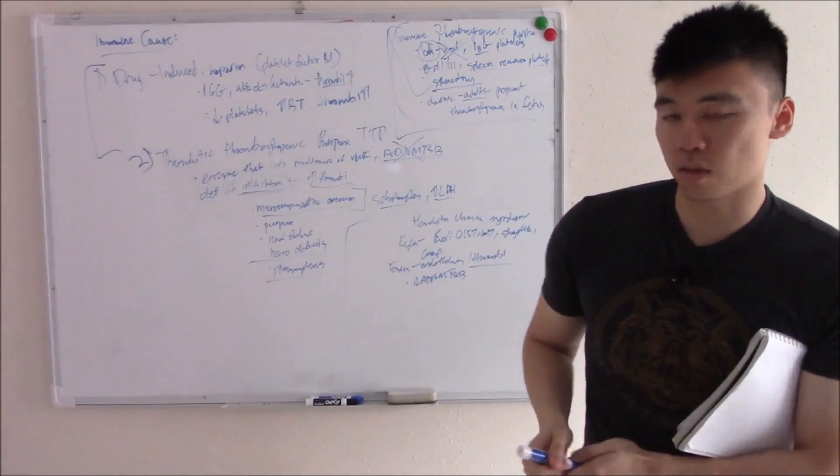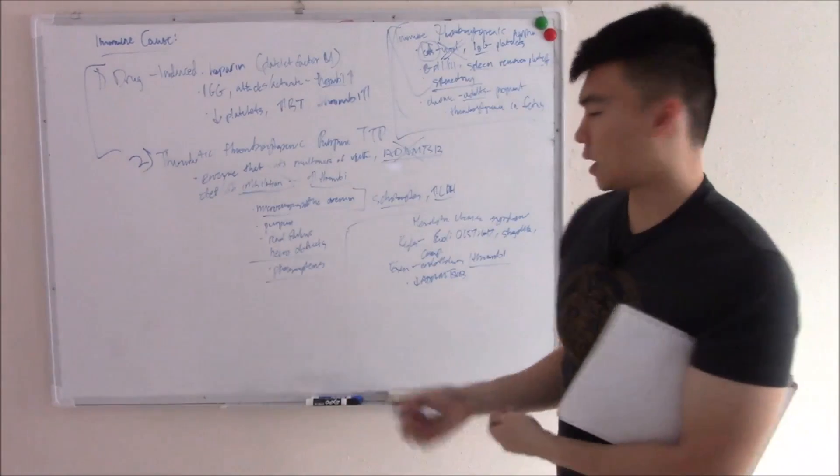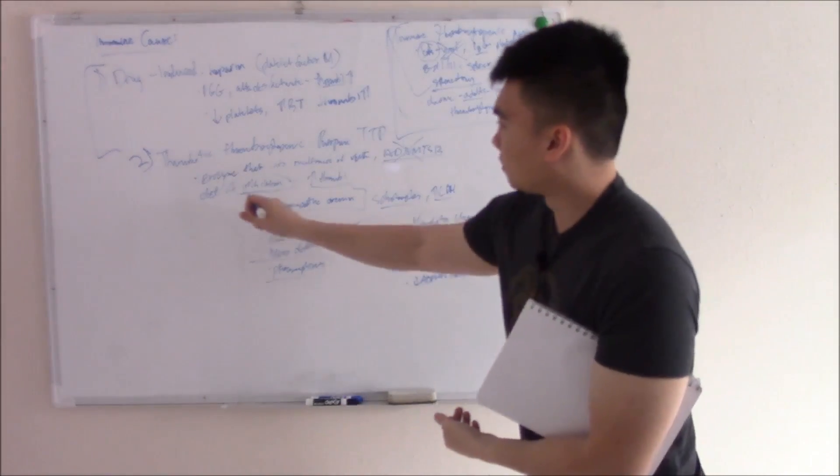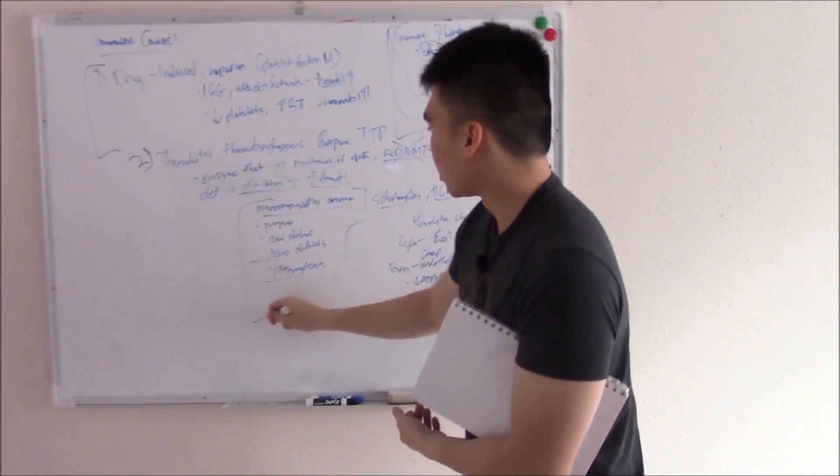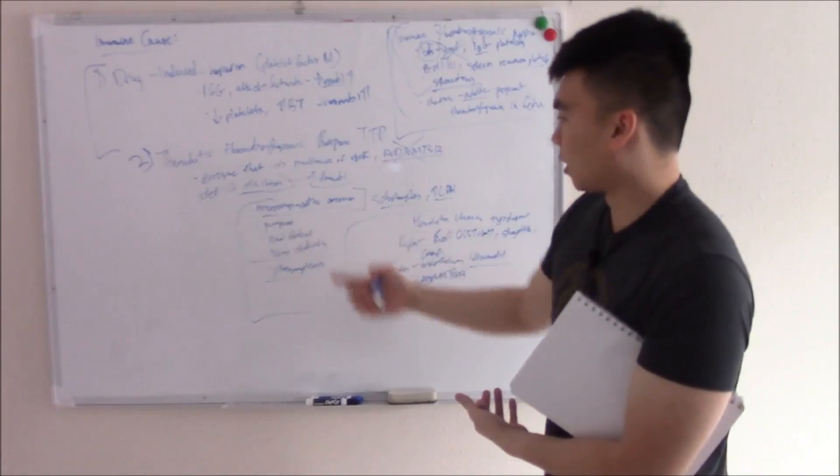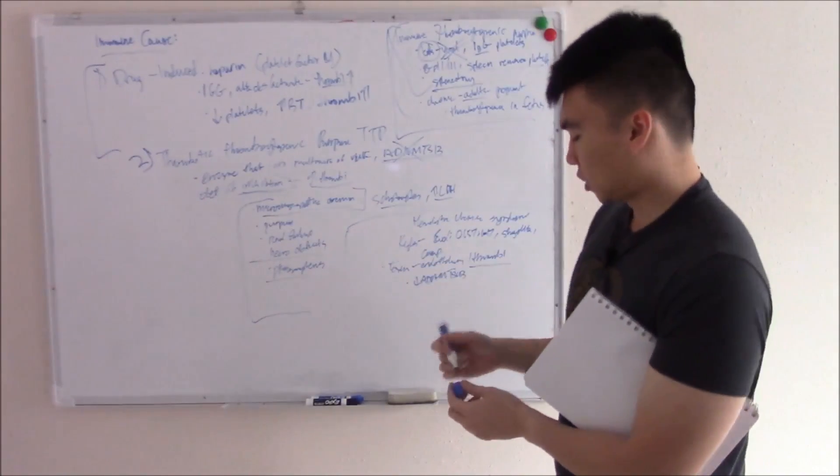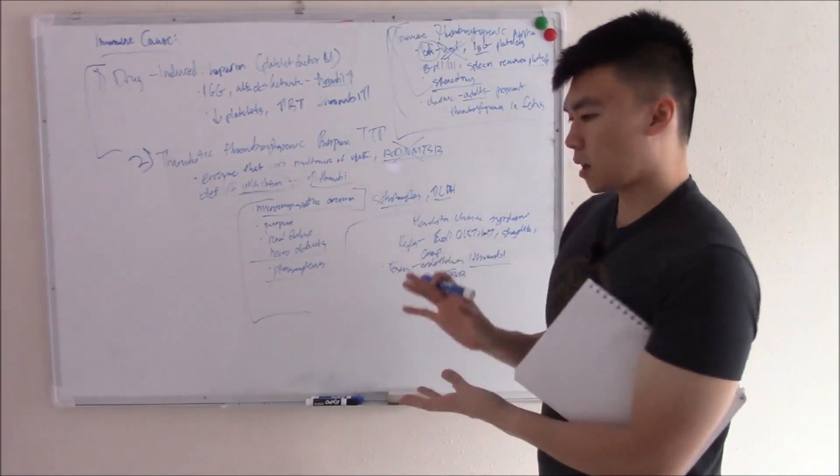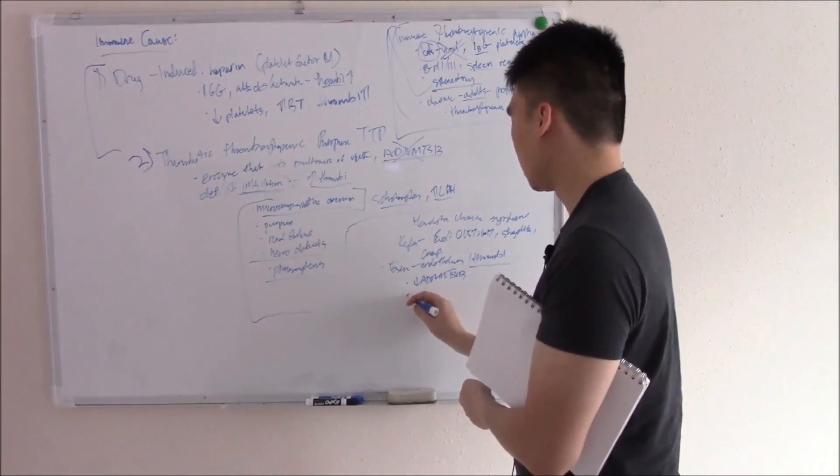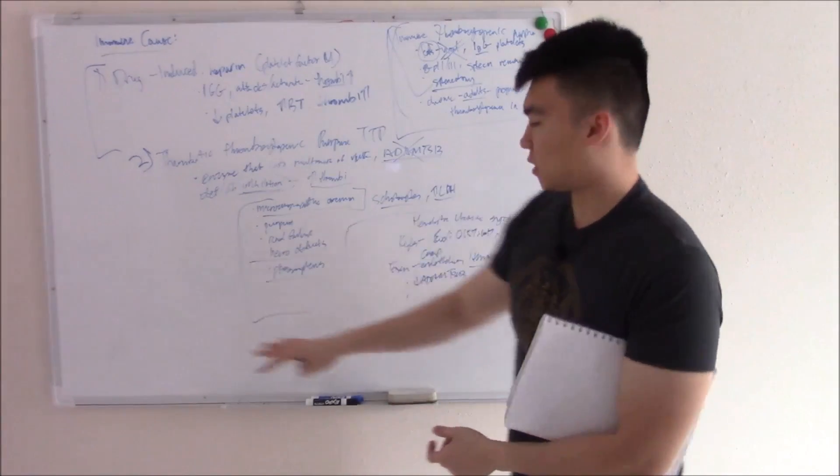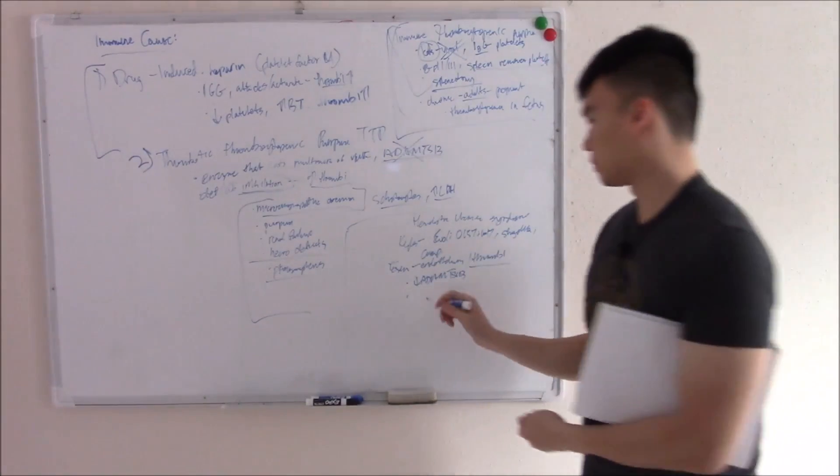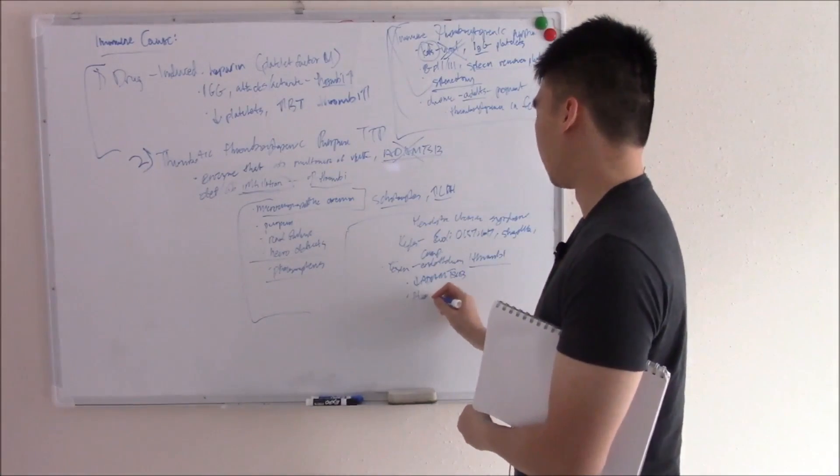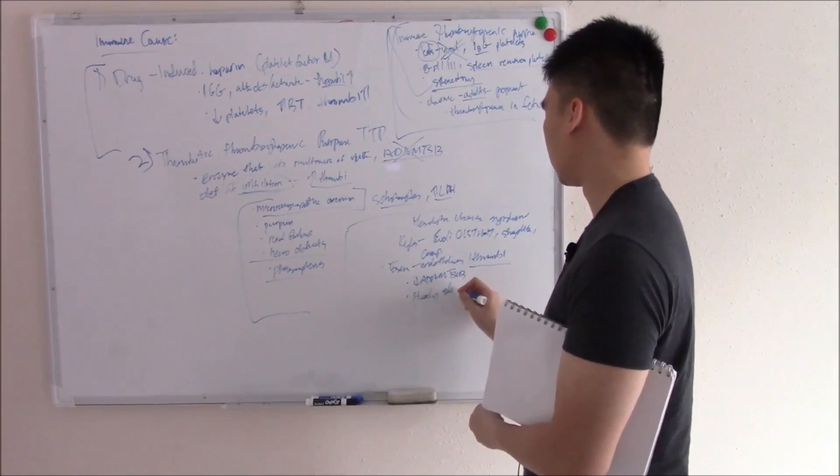So you're getting a ton of thrombi. And because you have all these thrombi, you get symptoms similar to thrombotic thrombocytopenic purpura. So you're going to have microangiopathic anemia. You're going to have purpura. You're going to have renal failure. You're going to have all of these. But there are a couple of differences. The difference is that here, instead of initially getting things like headache and fever, here, because it's due to things like E. coli, Shigella, you're going to get bloody diarrhea. So that is a big thing that separates it, bloody diarrhea.